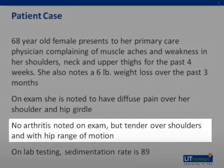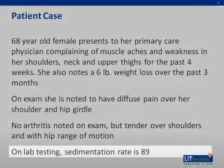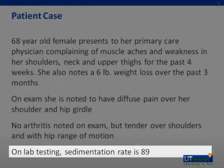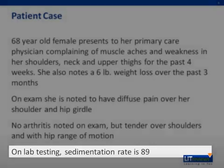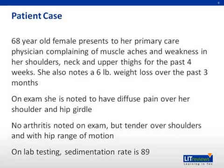There is no obvious joint swelling or arthritis. Lab tests are sent, which reveal an elevated erythrocyte sedimentation rate, or ESR, of 89. Based on the history, physical exam, and lab tests, you give the patient a preliminary diagnosis of polymyalgia rheumatica.